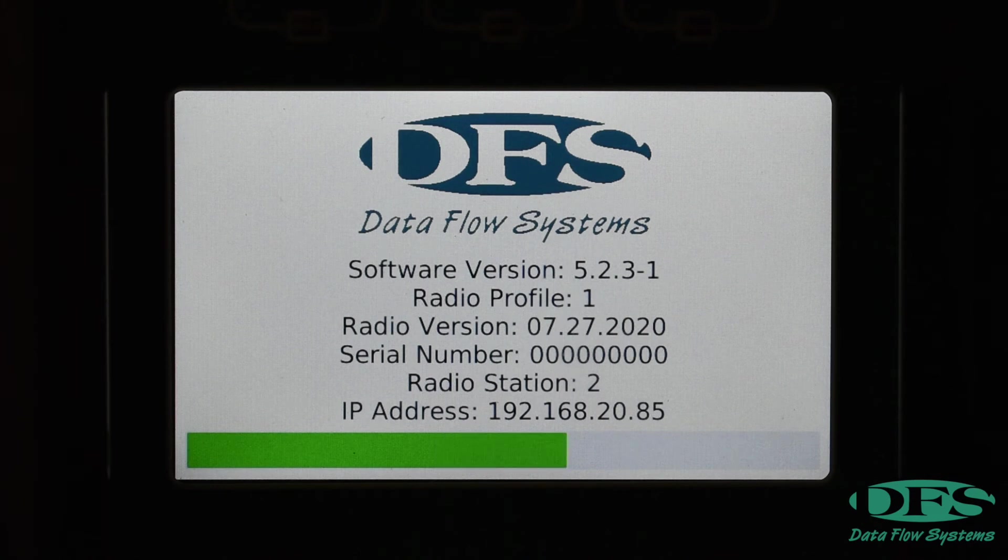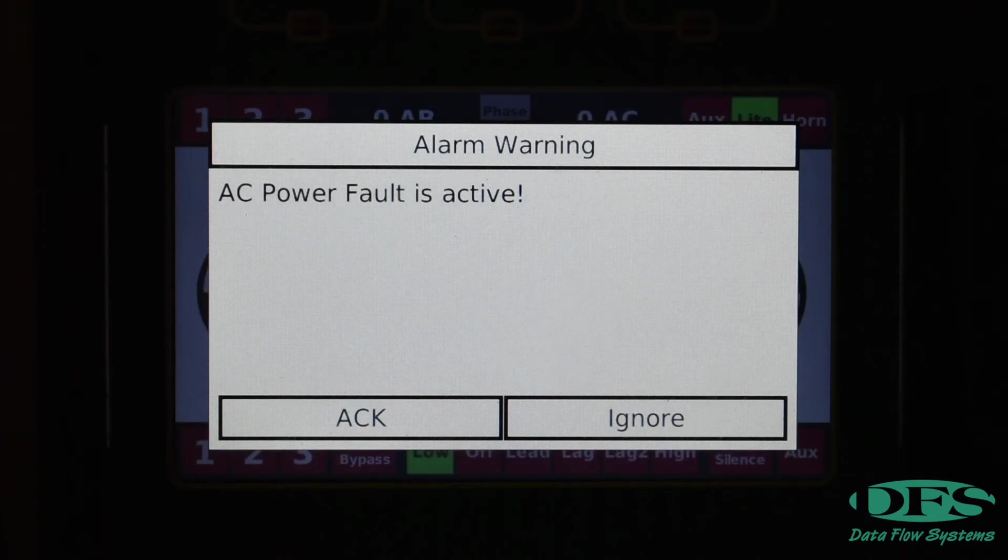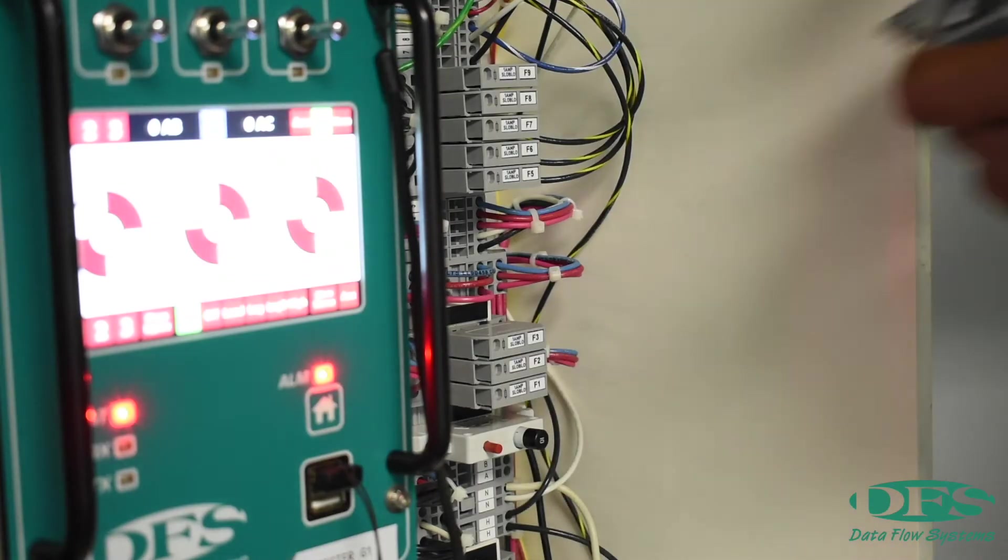Because the unit is on battery power, the TCU-800 will display AC fault active. Acknowledge the alarm. There will be a phase voltage alarm because the TFS is still removed. Acknowledge this alarm.